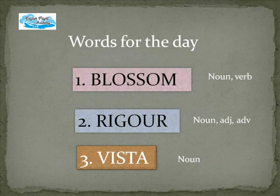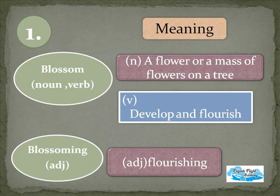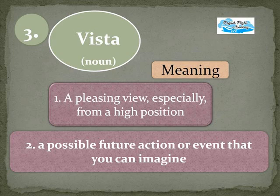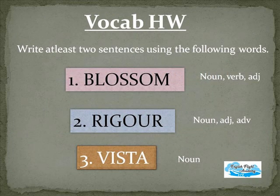Let's revise the words for the day: blossom, rigor, and vista. For homework, write at least two sentences using each word — blossom as a noun, verb, and adjective; rigor as a noun, adjective, and adverb; and vista as a noun. Revise all the forms thoroughly.